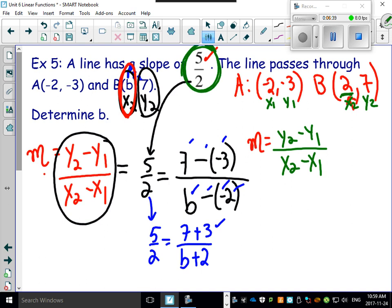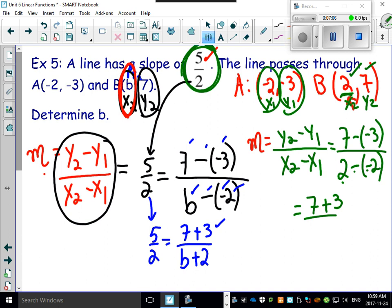Here we go, let's try. y2 is 7 right there, minus a minus 3, beautiful. x2 is 2 - that's what we figured out. x1 is minus 2. Here we go, ready? 7 minus a minus 3 becomes 7 plus 3. 2 minus a minus 2 becomes 2 plus 2.